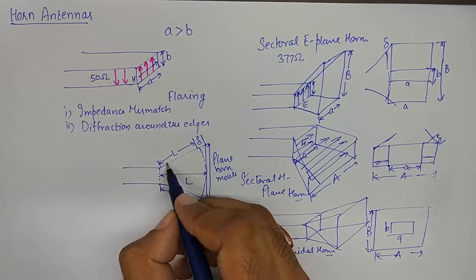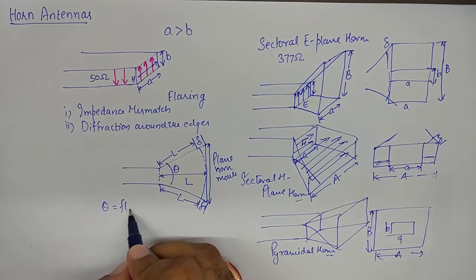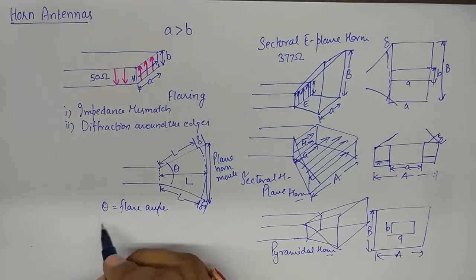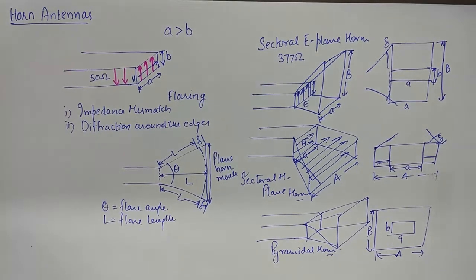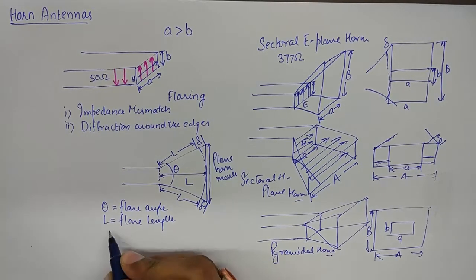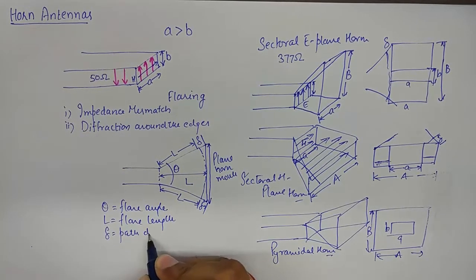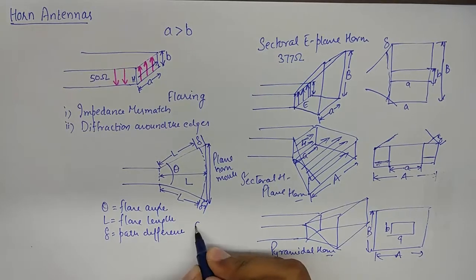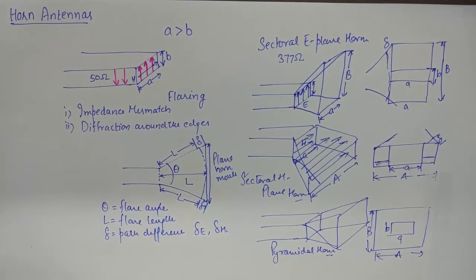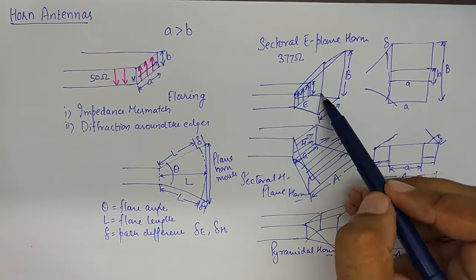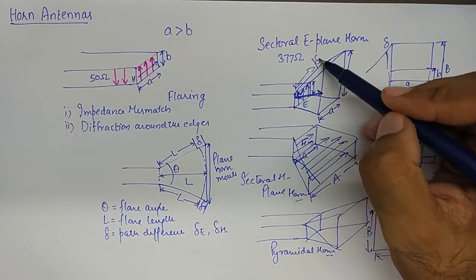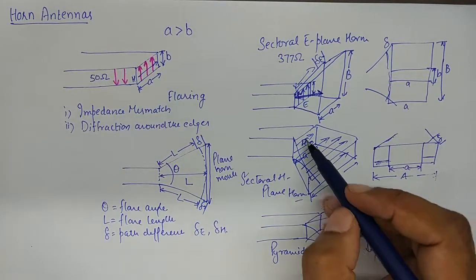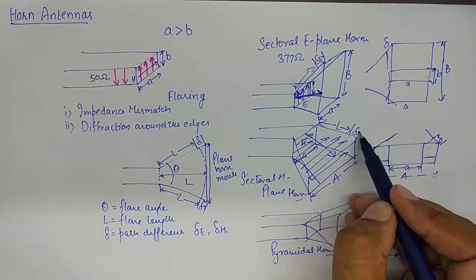The angle theta is known as the flare angle, L is known as the flare length, and delta is known as the path difference. There are two deltas — delta E and delta H. The difference in lengths in the vertical section results in delta E, and the difference in lengths in the horizontal section results in delta H.